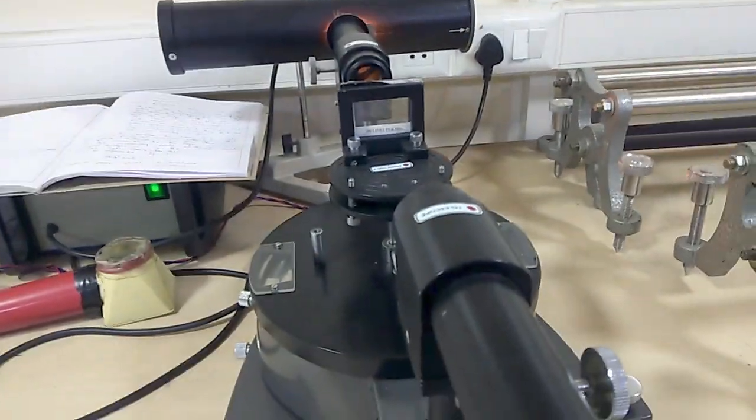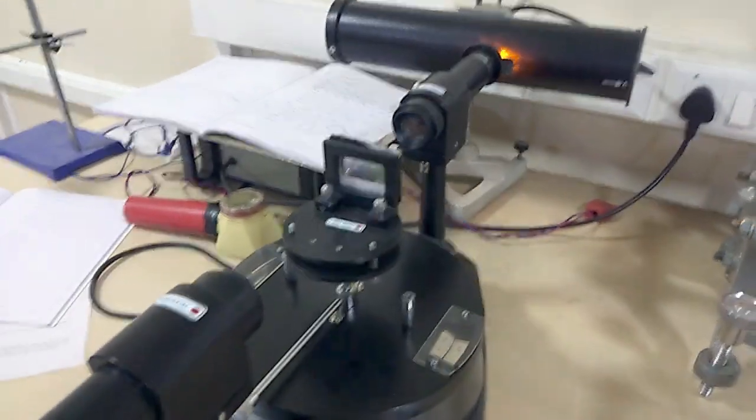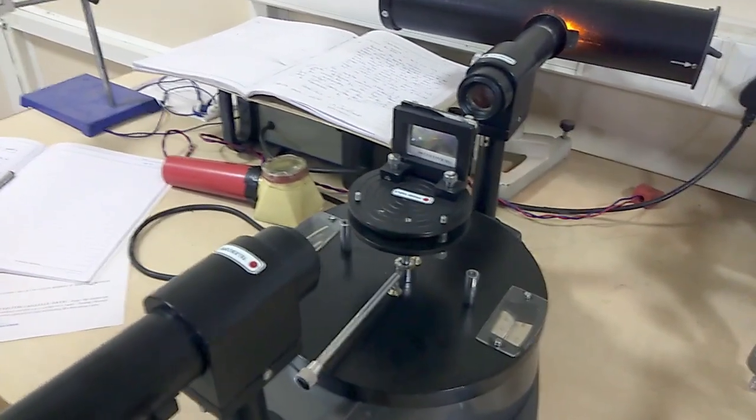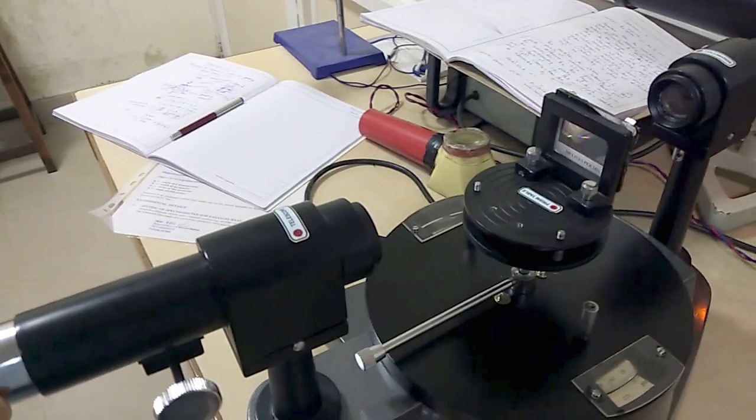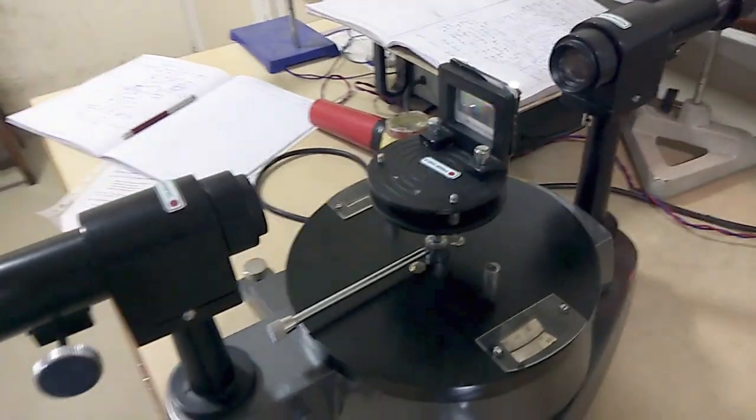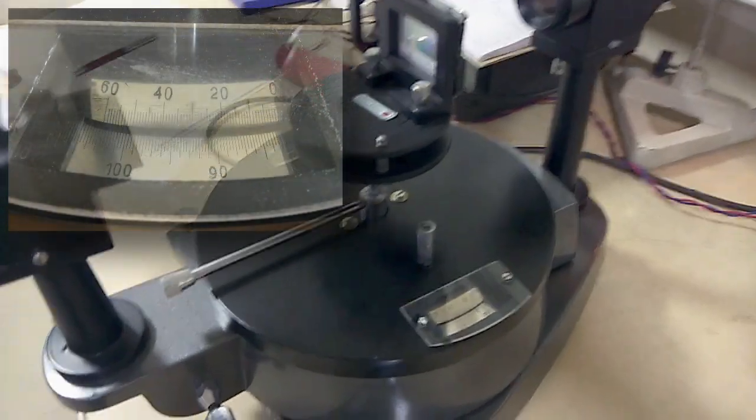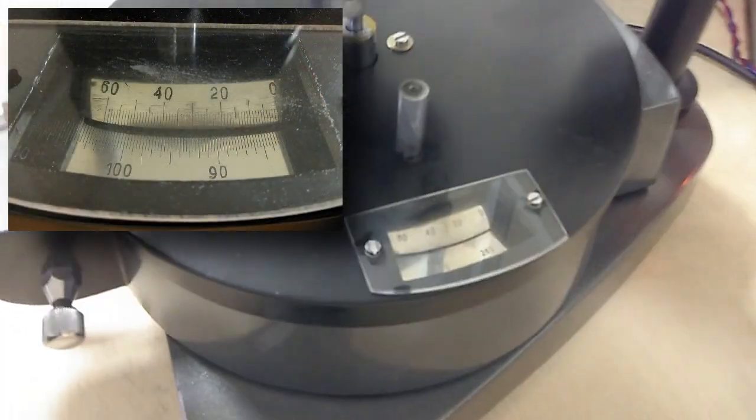So how to take the data? The data here means the position of this telescope. So given a particular position from where you are seeing the light, you can record its position from these two scales.